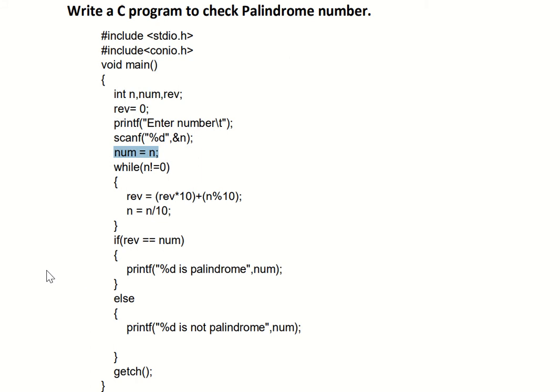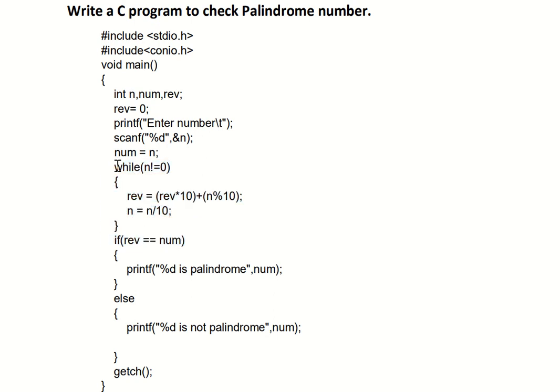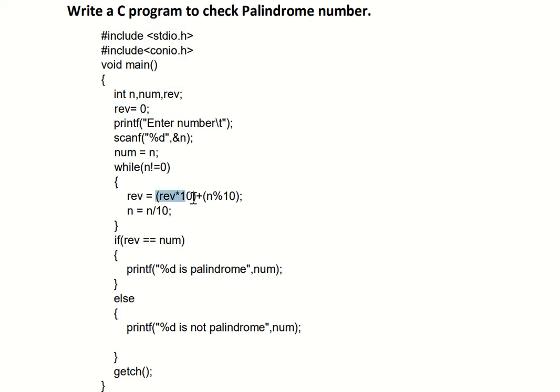Next, num is equal to n, meaning whatever number the user entered, we store that same number in one more variable called num. Later when we check using the if condition, we will use num as the original number instead of n. Now the logic part is the while loop: while n is not equal to zero. Inside the loop, reverse is equal to reverse into 10, and the initial value of reverse here is zero.